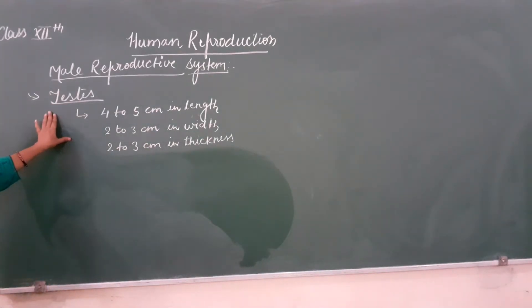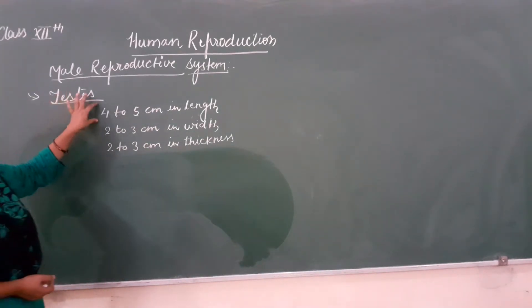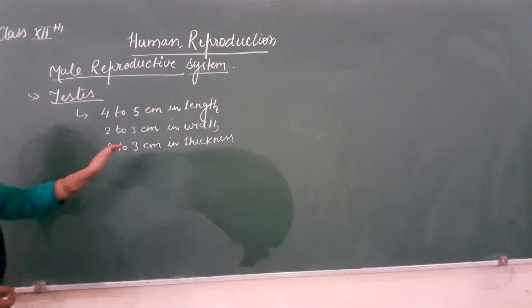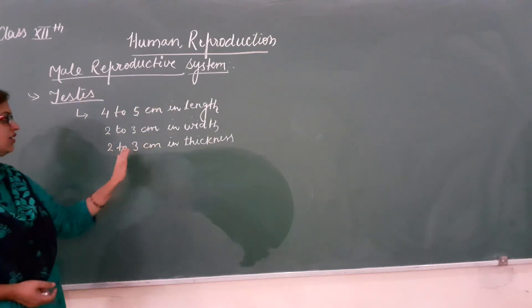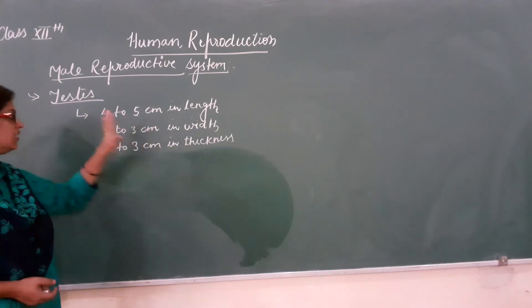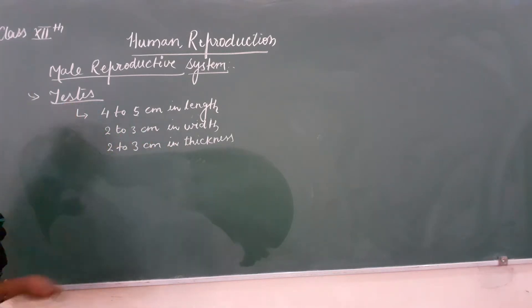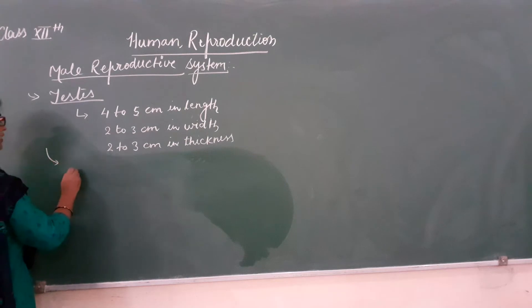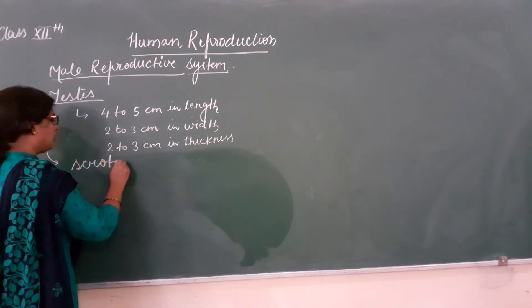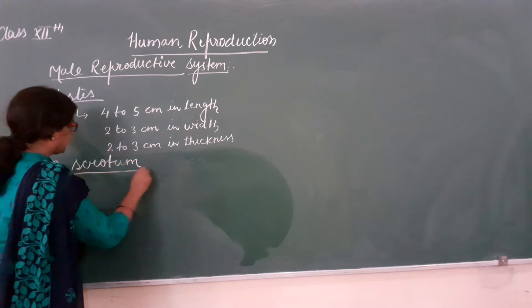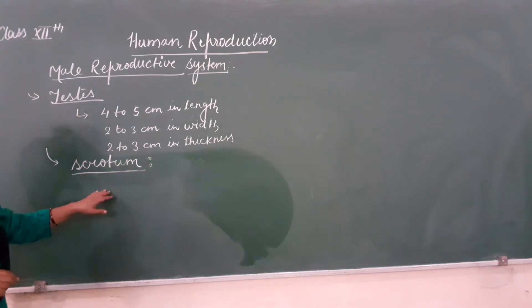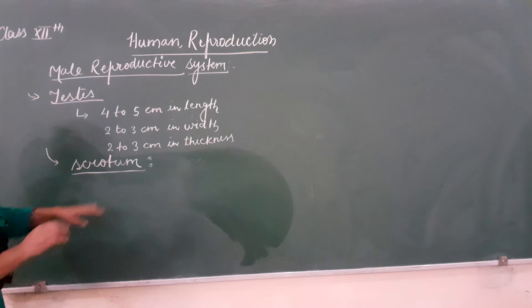In males, the testis is approximately 4 to 5 centimeters in length, 2 to 3 centimeters in width, and about 2 to 3 centimeters in thickness. The testis lies in a sac-like structure called the scrotum, which is a pouch-like structure.